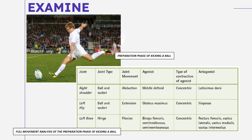Do not be confused if you are watching this video for the first time — just refer back to your module to understand terms like abduction, extension, flexion, and contraction. For the agonist muscles: under the right shoulder, we have the middle deltoid. For the left hip, we have the gluteus maximus. For the left knee, the agonists are the biceps femoris, the semitendinosus, and the semimembranosus. The type of contraction for all agonists — the middle deltoid, the gluteus maximus, and the biceps femoris — is concentric.